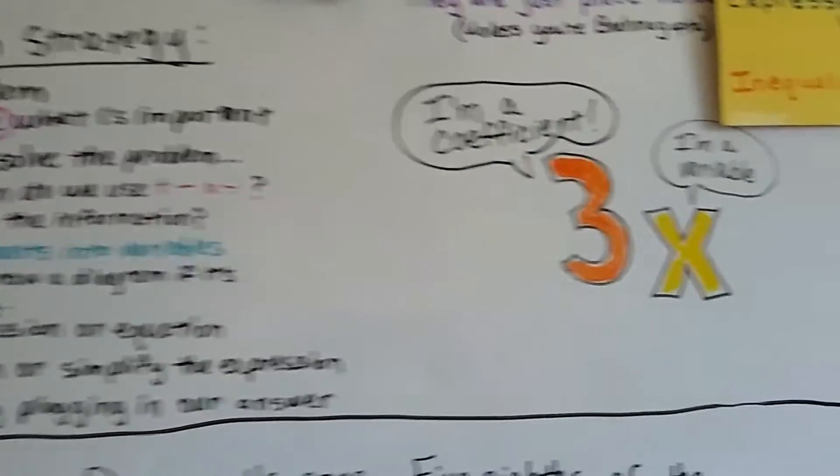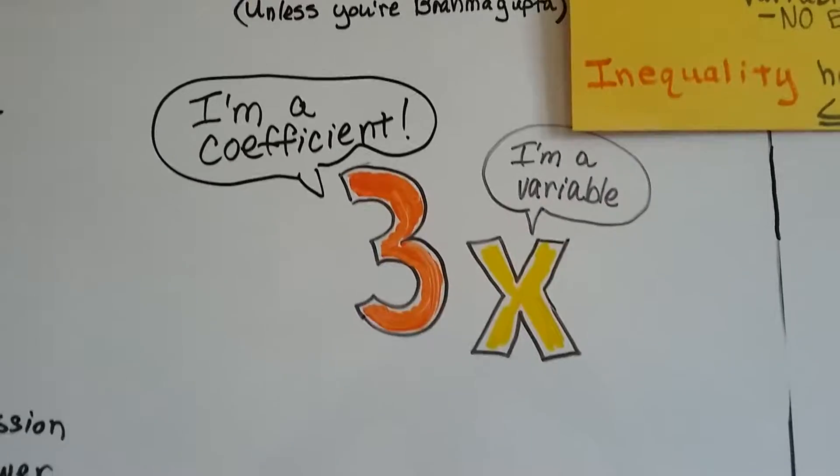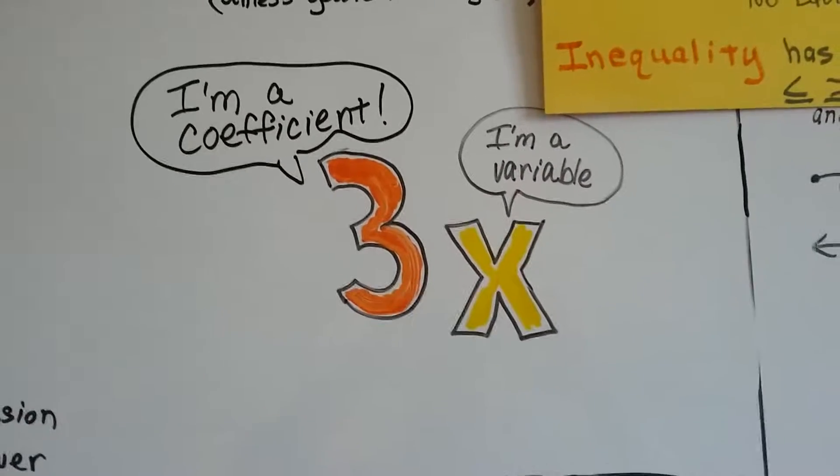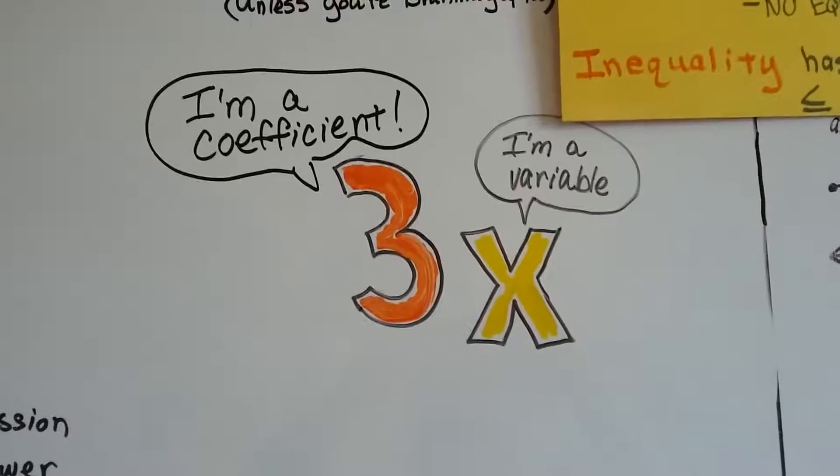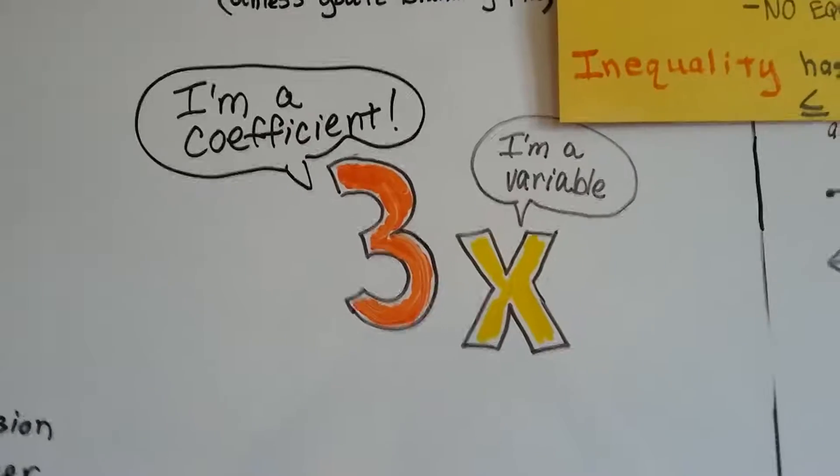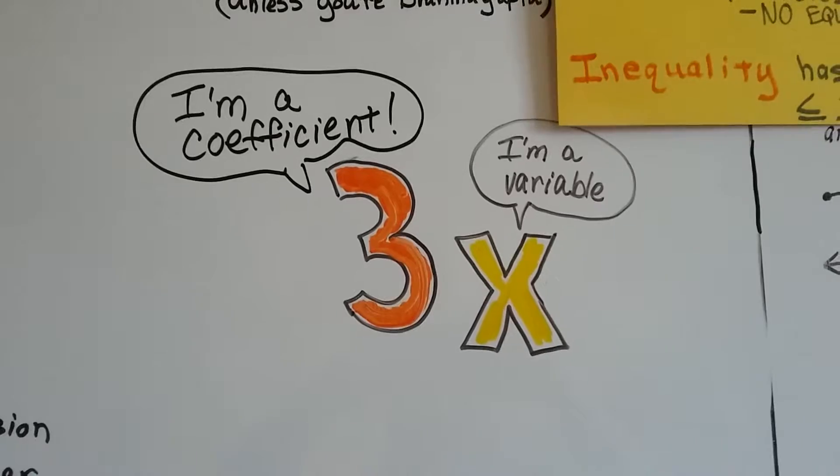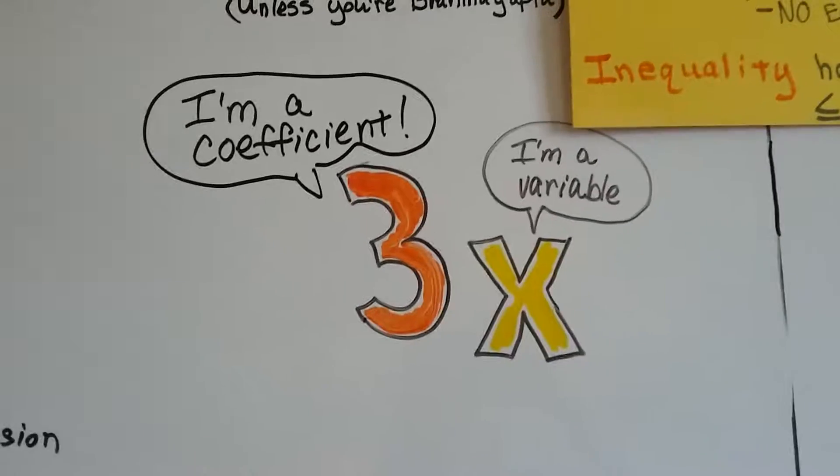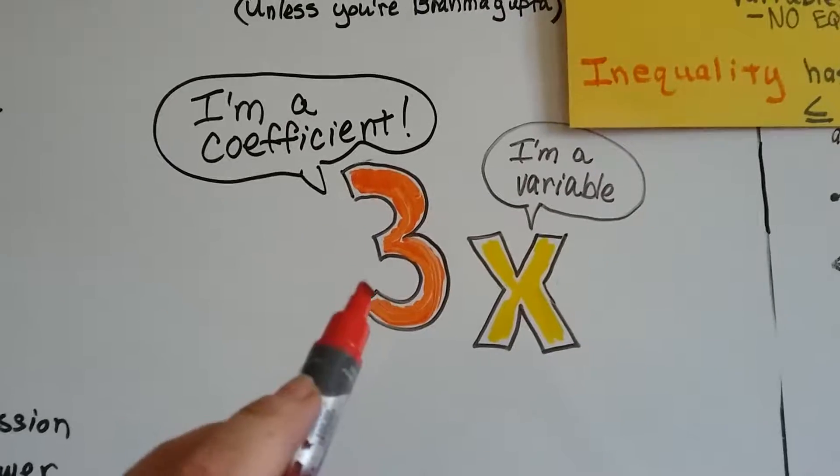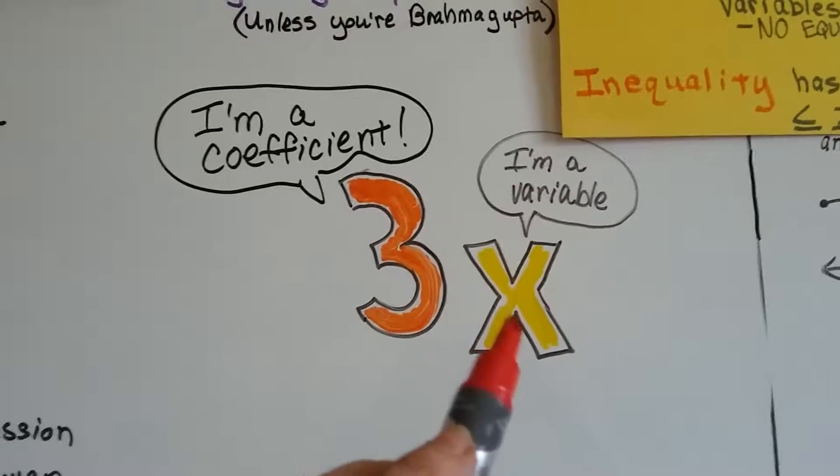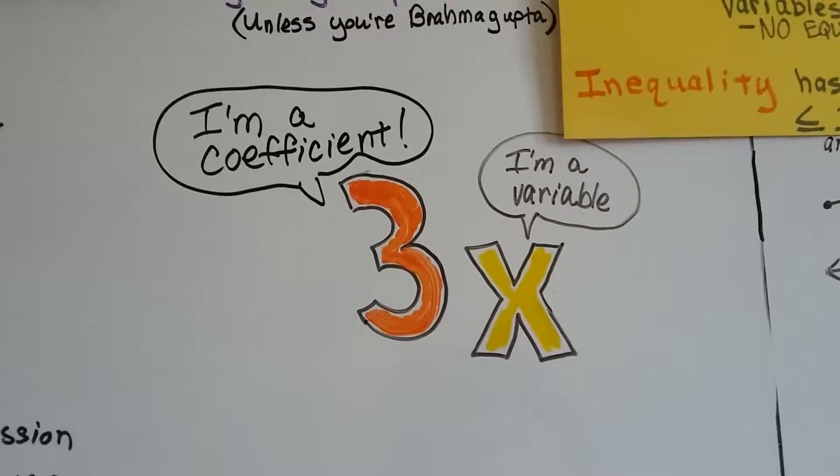These two guys are going to be really important in the video. I'm going to introduce you to 3 and x. 3 is a coefficient and x is a variable. The coefficient is a number that's in front of a variable. They're buddies. If he didn't have this variable here, he would just be a stand-alone number.